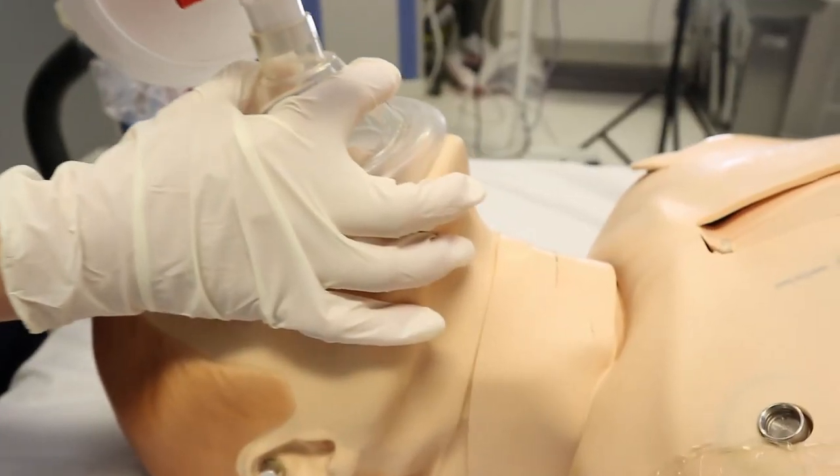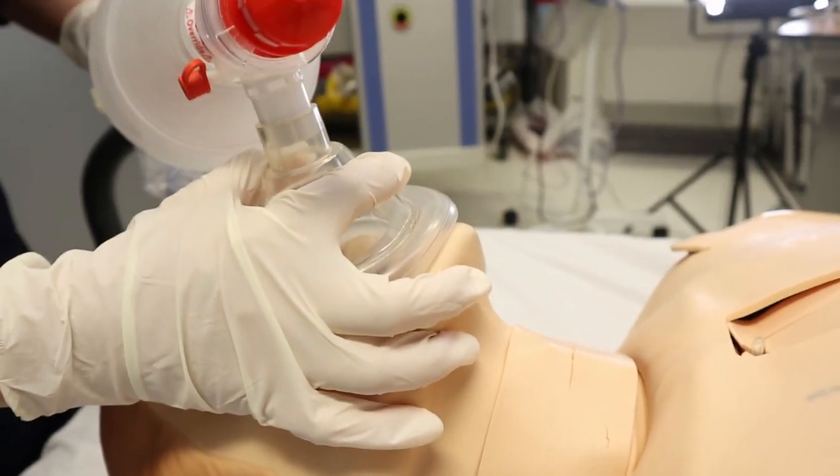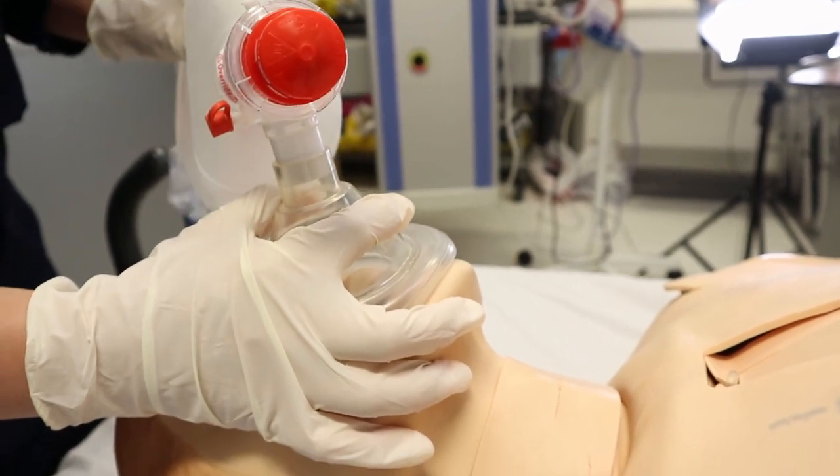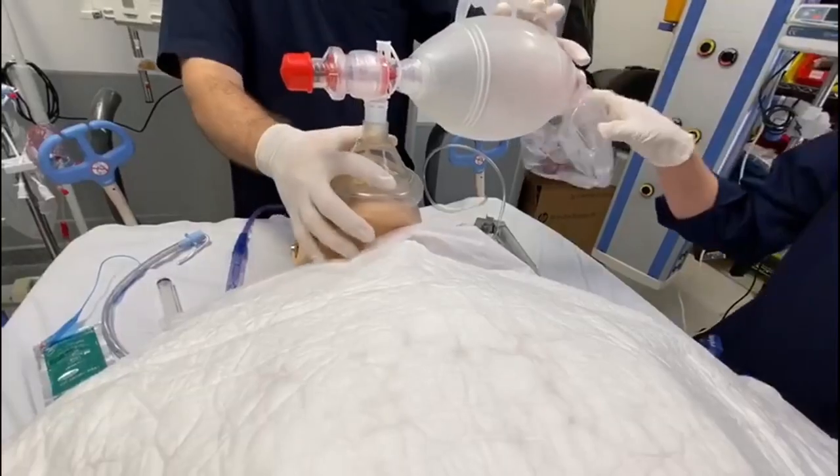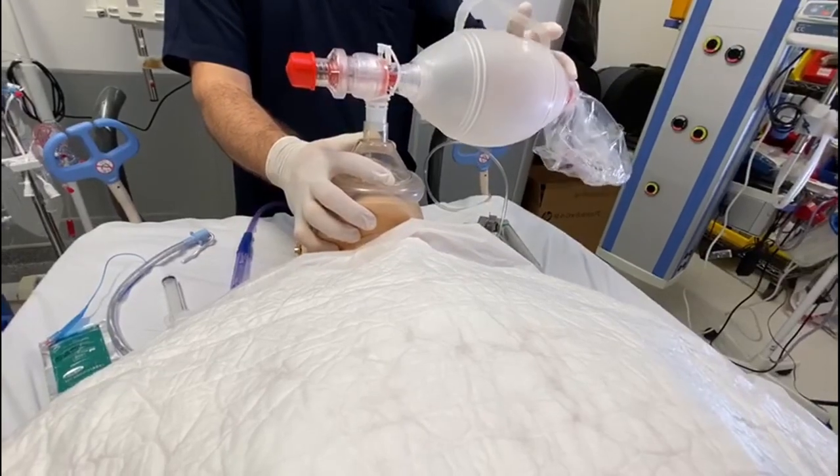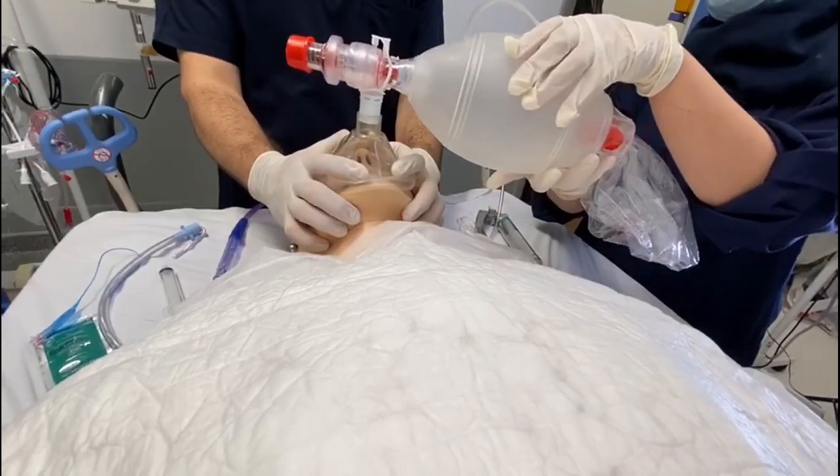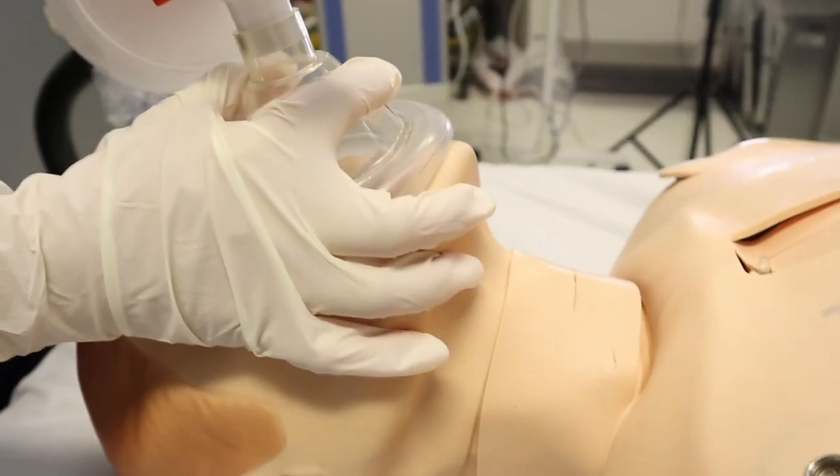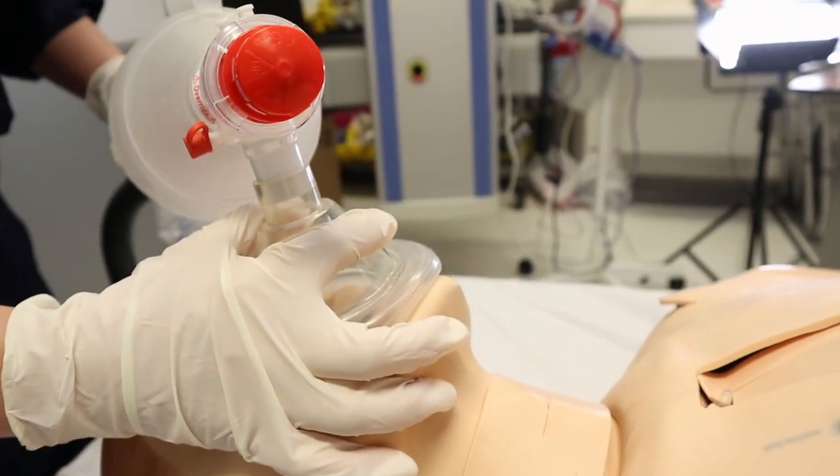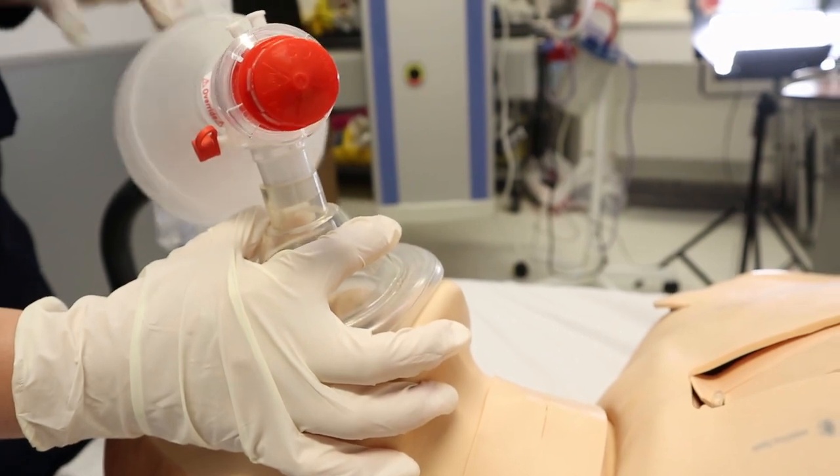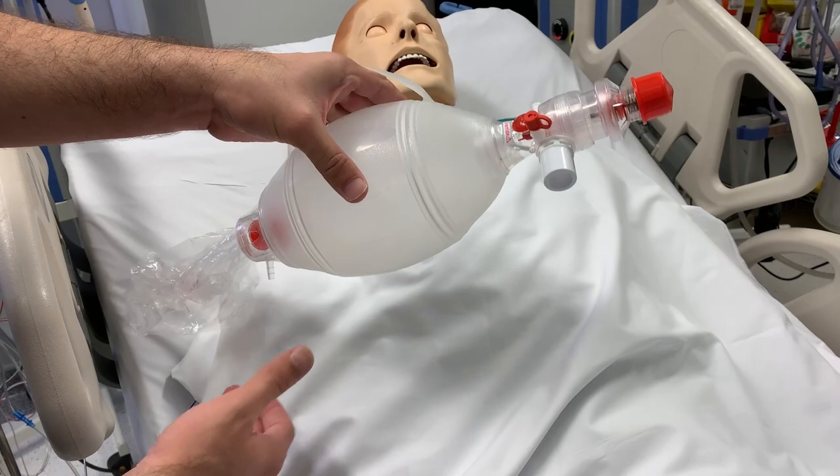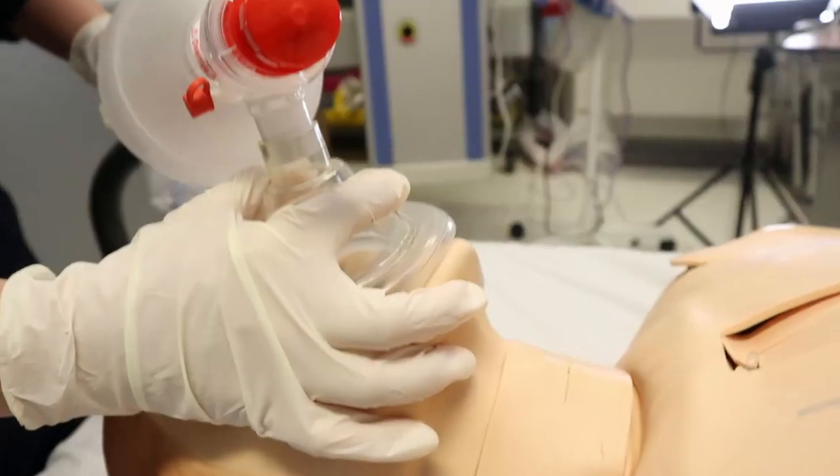We really need to make sure that we are firmly pressing by C and E technique. If the sealing did not achieve by one hand, you might need to use two hands and you need another person to squeeze the bag. So you will put like double C and double E technique. Squeezing for the bag should be gently over one second, so do not make it too fast and do not make it too slow. Avoid high peak pressure, avoid high volume, avoid rapid inflation.